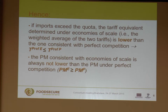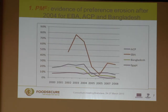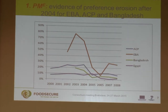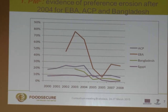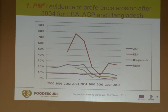With these different assumptions, the first paper finds evidence of preference erosion, especially for ACP countries and Bangladesh, after 2004 following the CAP rice reform.